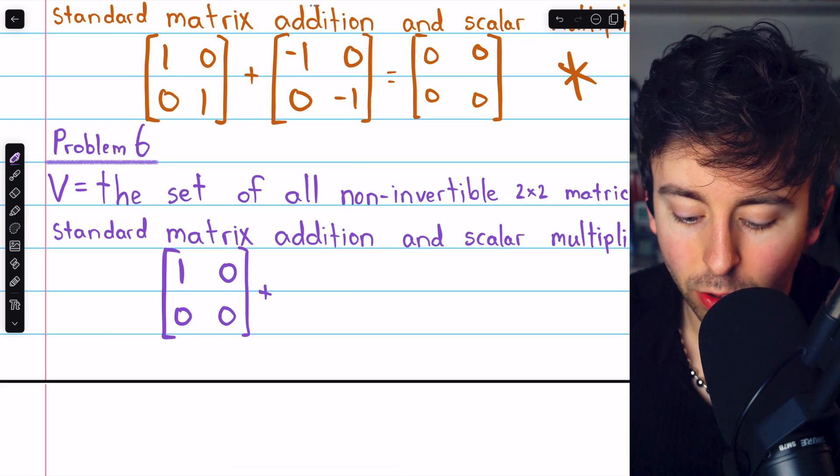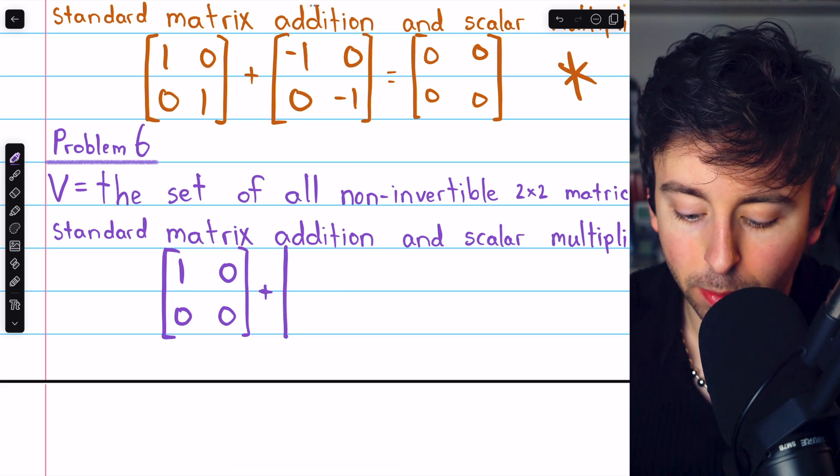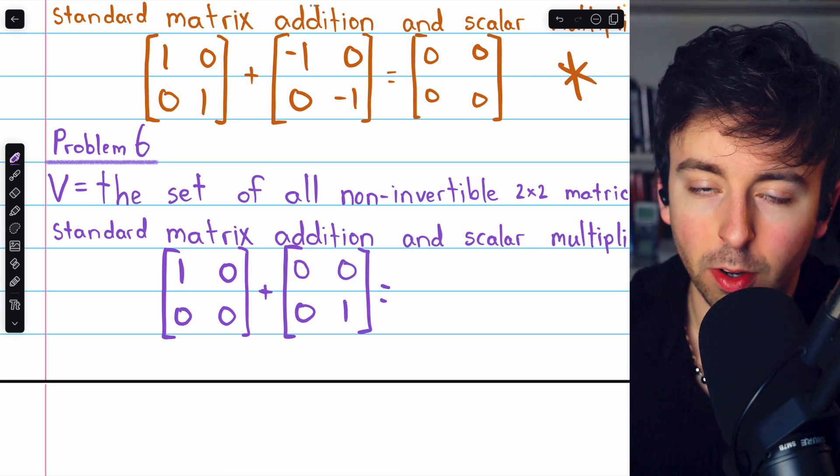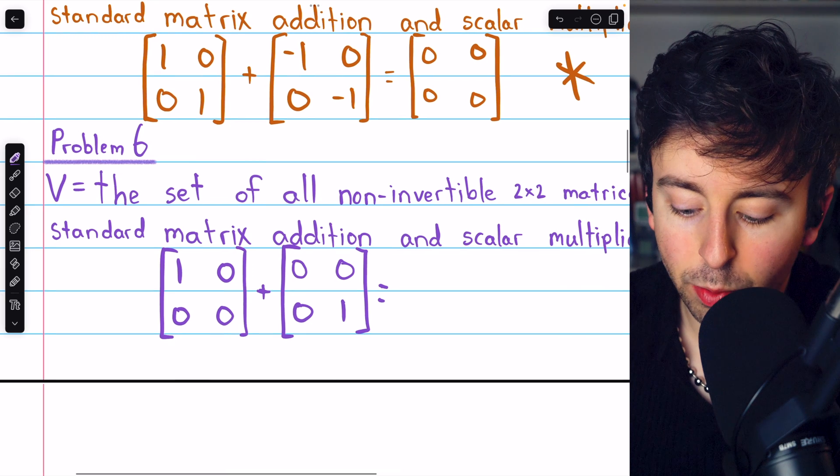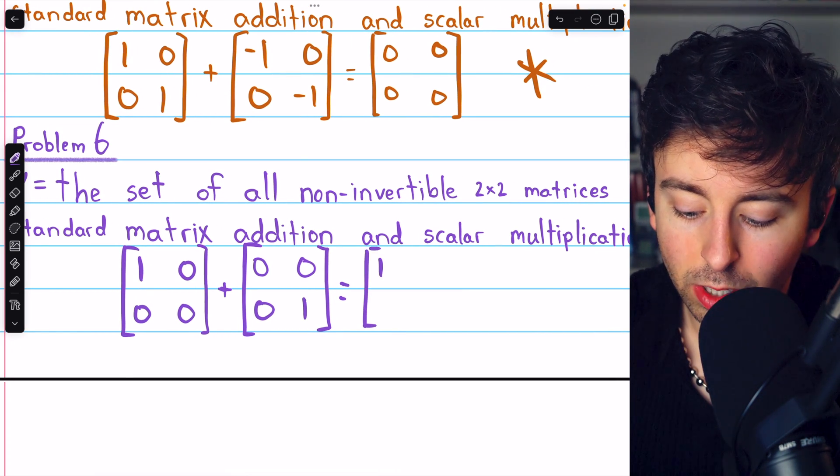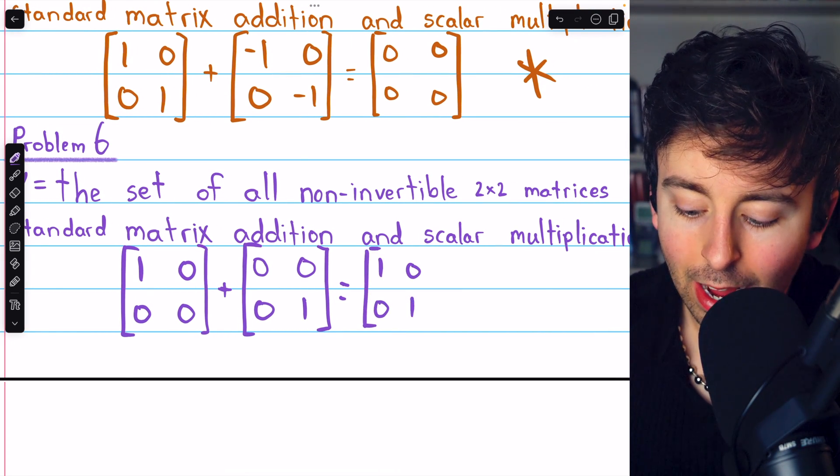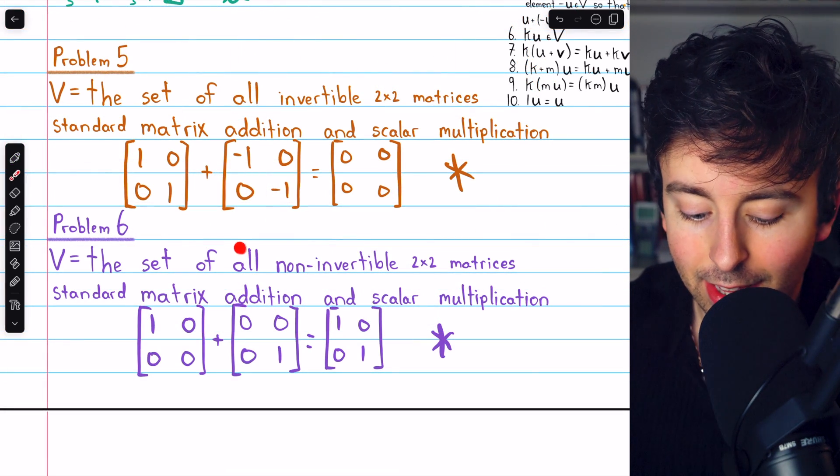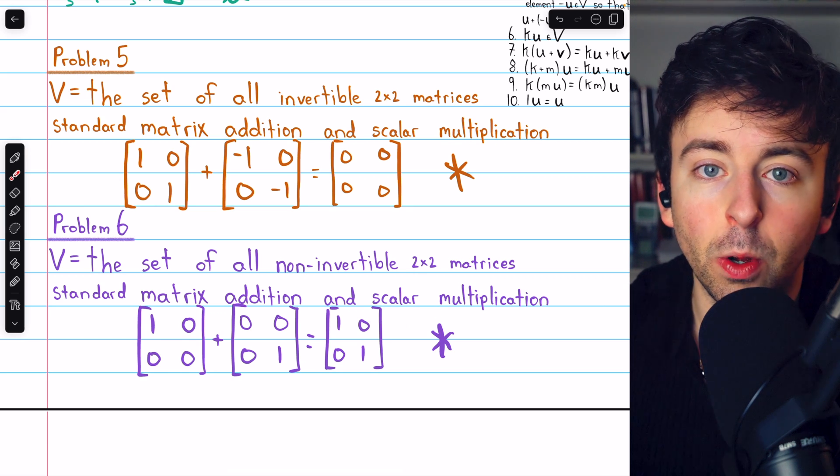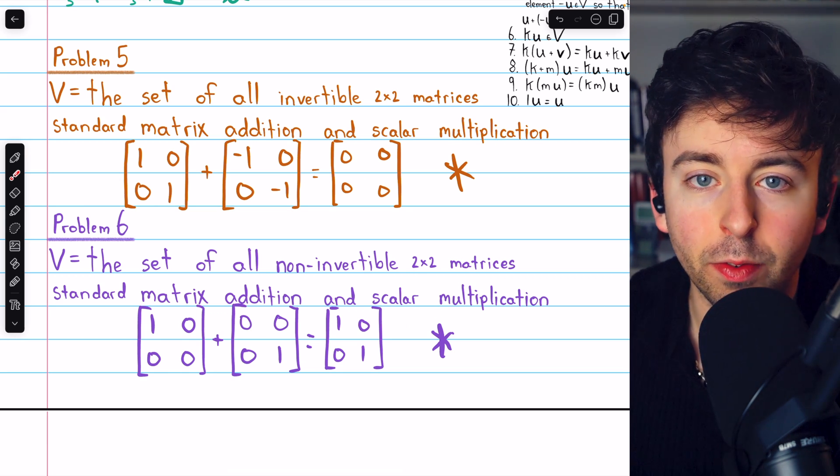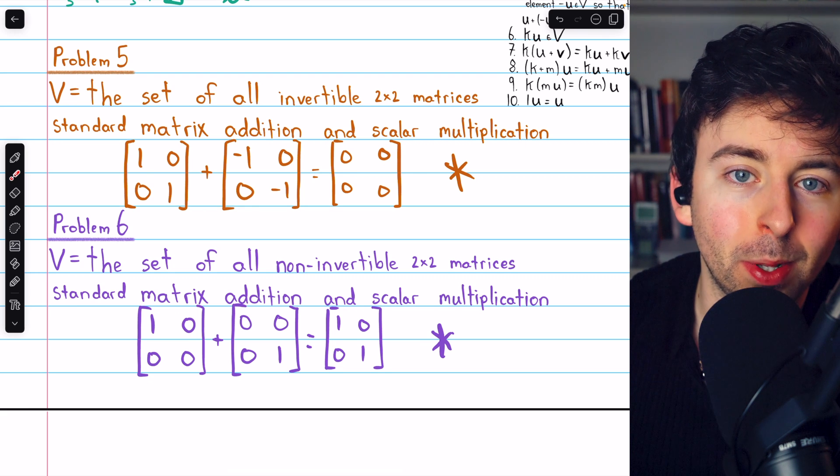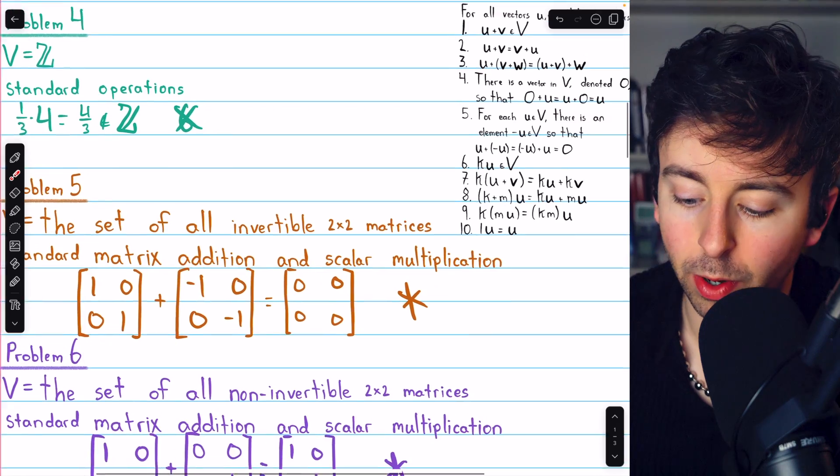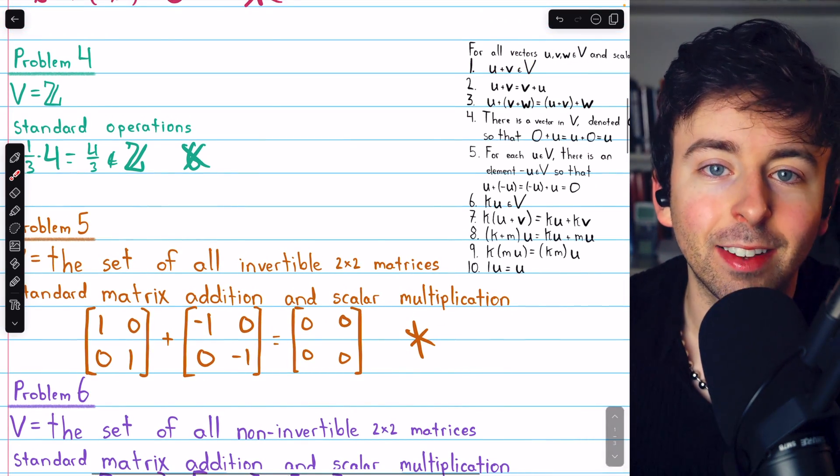And we could add it to this other matrix that's not invertible, the matrix [[0, 0], [0, 1]]. Neither of these matrices are invertible, so they're both in our set. But if we add them together, we get the identity matrix, which is certainly invertible. And so again, we violated axiom 1 of closure. Interestingly, this example does not violate closure of scalar multiplication. If you have a non-invertible matrix, you can't multiply it by a scalar to make it invertible. But regardless, it's not a vector space because, for example, it does not satisfy axiom 1.